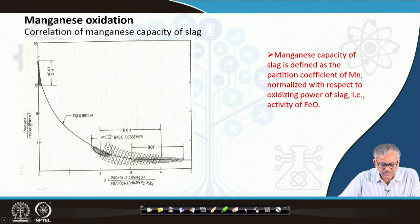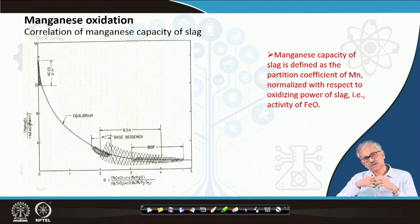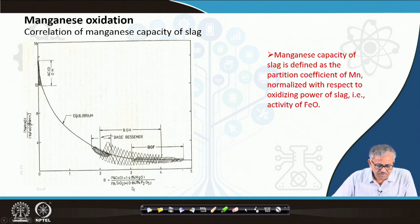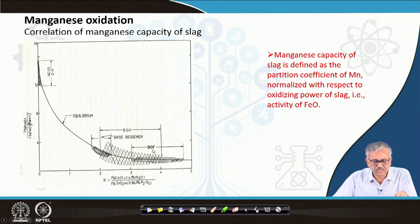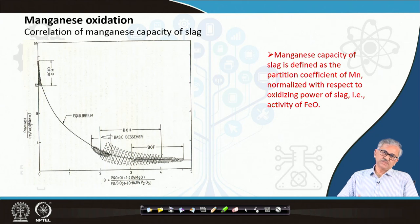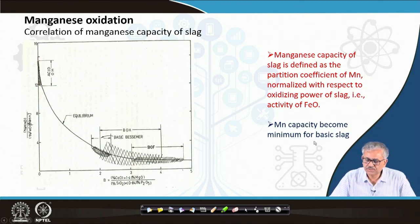At high basicity, the manganese capacity of the slag becomes low. In acidic slag — such as in the acid open-hearth furnace — manganese capacity is maximum. In basic slag — such as the basic open-hearth or BOF — manganese capacity is quite low. So under basic slag conditions, manganese reversion takes place and the slag cannot hold much MnO.